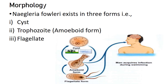Now let's talk about the morphology of Naegleria fowleri. It exists in three forms: the cyst form, the trophozoite form (also known as the amoeboid form), and the flagellate form. The flagellate stage is transient.